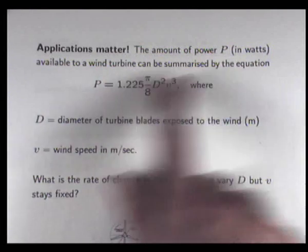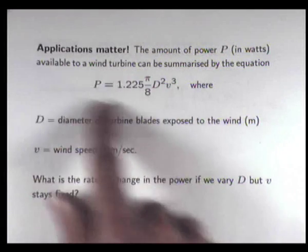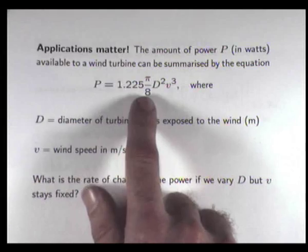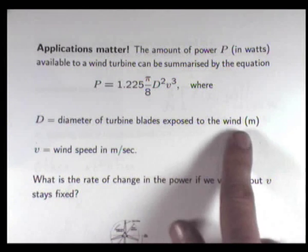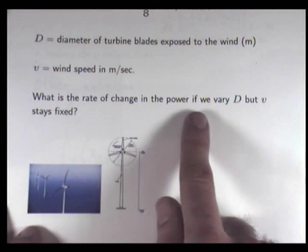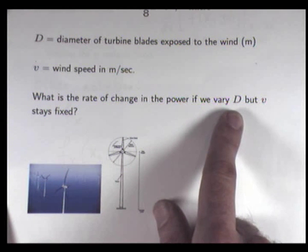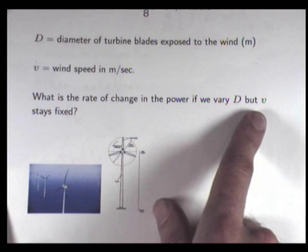Let's look at a simple problem for modelling. The amount of power P available to a wind turbine can be summarised by this equation. We've got a couple of constants and a couple of variables, d and v. Here, d is the diameter of the turbine blades exposed to the wind, and v is the wind speed. A natural question is: what is the rate of change in the power P if we vary the diameter of the blades, but the wind speed stays fixed?